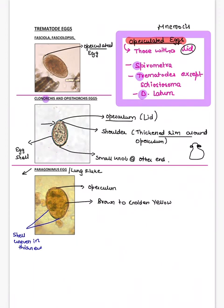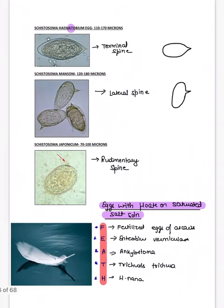For Paragonimus — remember it causes pulmonary disease, hence known as the lung fluke. It again has an operculum and is bile-stained, appearing brown to golden yellow in color. What's important is that the rim around the operculum is uneven in thickness — that is the key distinguishing feature for Paragonimus.